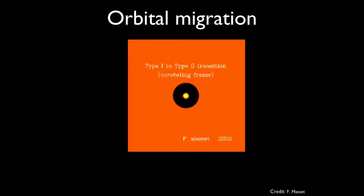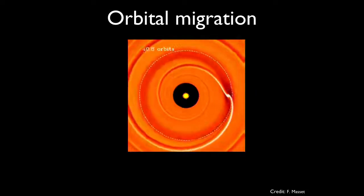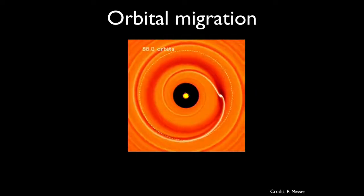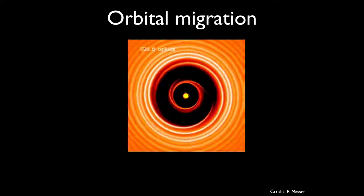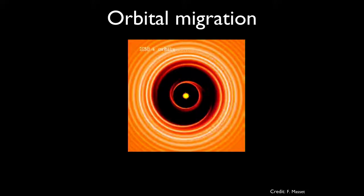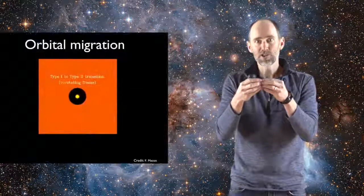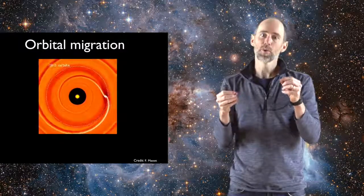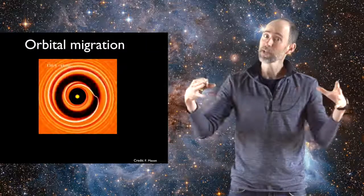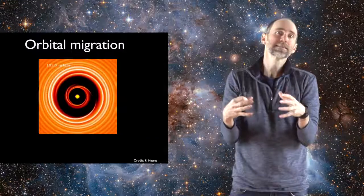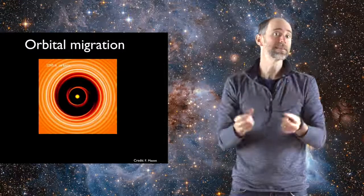Once large planets form, they also undergo a process called orbital migration, which arises because of gravitational interactions between the growing planet and the gaseous disk. And what this movie is showing is a planet that's growing and migrating within a gas disk at the same time. So what you can see as the movie starts is that a planet's growing, it launches these spiral density waves, which act on the planet's orbit and cause it to shrink.